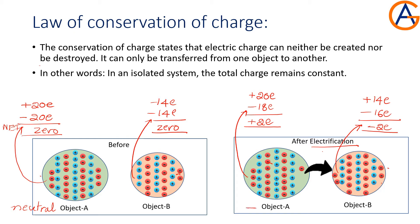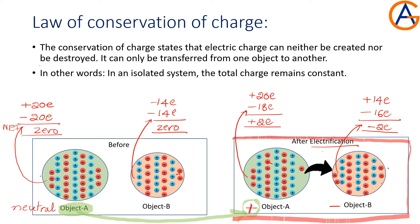So here object A is becoming positively charged and object B is becoming negatively charged. We have to note that this electrification process has not created any new positive charge in object A — no new positive charge is created in this whole system.